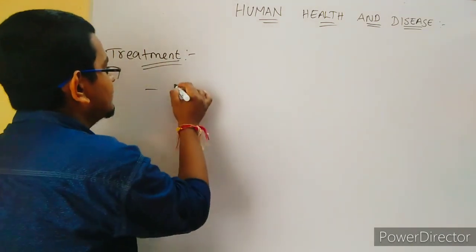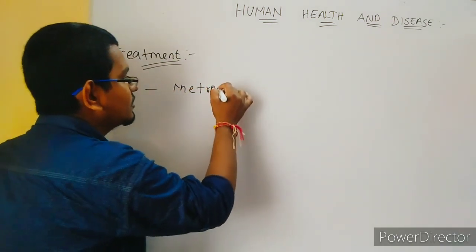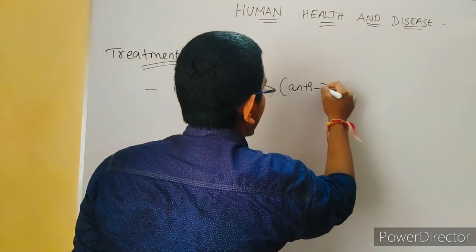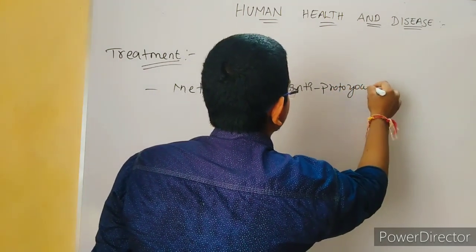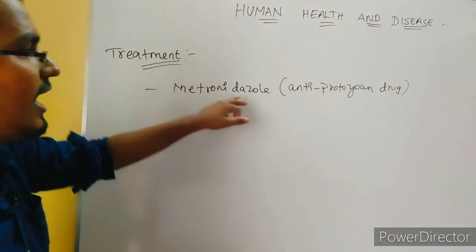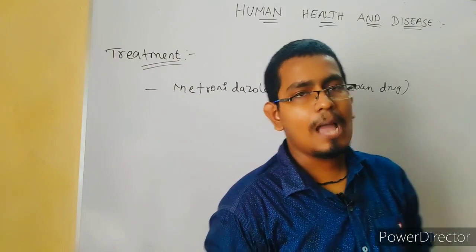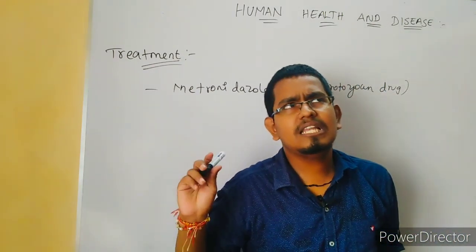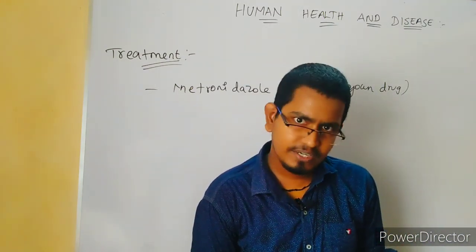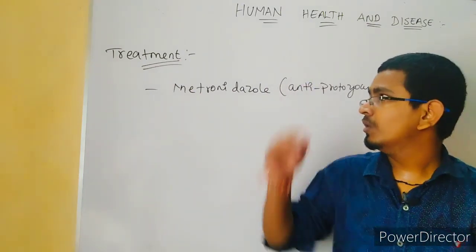The treatment for amoebiasis is metronidazole, which is an anti-protozoan drug. In this class we completed the topic of amoebiasis, which was the remaining protozoan disease. In the next class we will discuss fungal and helminthic infections. Please read up to this point and practice the MCQ questions.